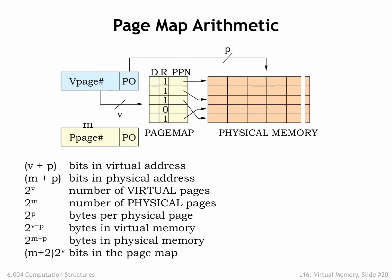All the other parameters listed on the right are derived from these three parameters. The typical page size is between 4KB and 16KB — the sweet spot in the trade-off between the downside of using physical memory to hold unwanted locations and the upside of reading as much as possible from secondary storage, so as to amortize the high cost of accessing the initial word over as many words as possible.